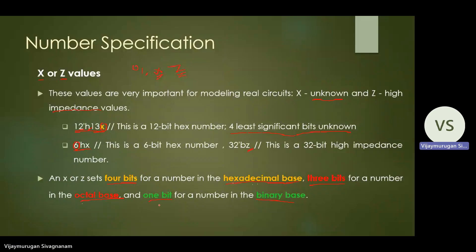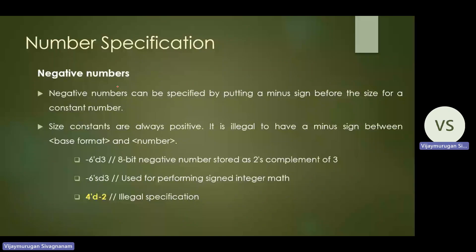Next, negative numbers in Verilog HDL are specified by putting a minus sign before the size for a constant number. The minus sign must come before the size. Note that the size constant itself is always positive — it is illegal to place a minus sign between the base format and the number.